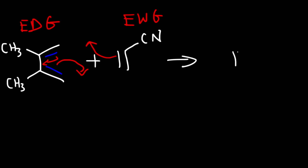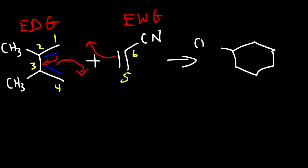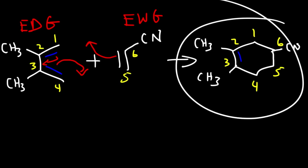These two will react to give a product. Labeling the carbons one through six: on carbon two we have a methyl group, between carbons two and three we have a double bond, and on carbon six we have a CN group. This is the product for this reaction.